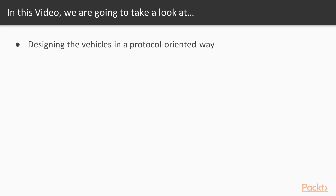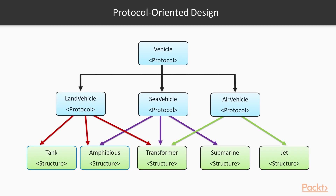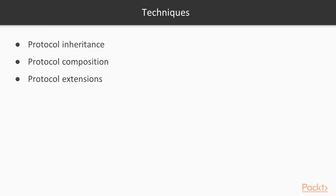In this video, we will be designing the vehicles in a protocol-oriented way. As we did with the object-oriented design, we will start off by looking at a very basic diagram that shows how to design the vehicle types in a protocol-oriented way. In this new design, we use three techniques: Protocol Inheritance, Protocol Composition, and Protocol Extensions.